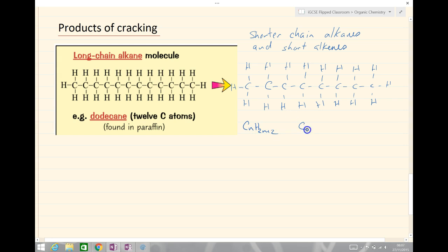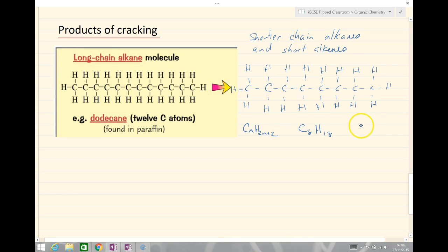Which means this has got C8H18. 8 times by 2 is 16 plus 2 gives us 18. And what that leaves us with then is 4 carbons to fill. The octane or C8H18 is a shorter chain more useful fuel for petrol.